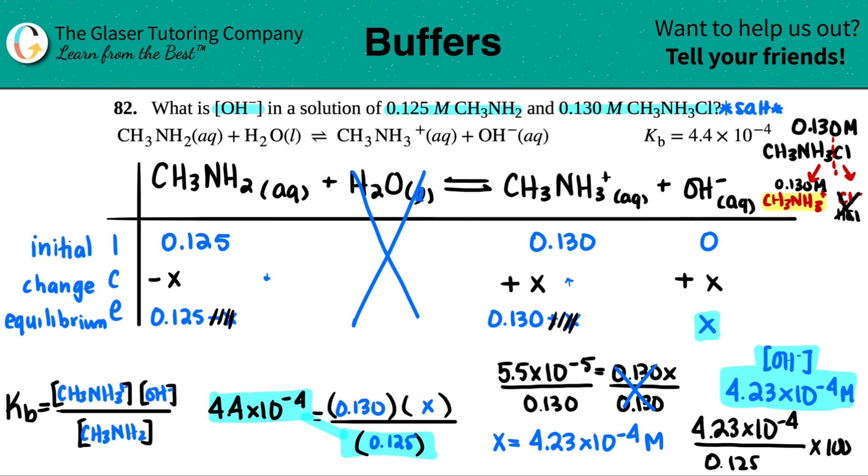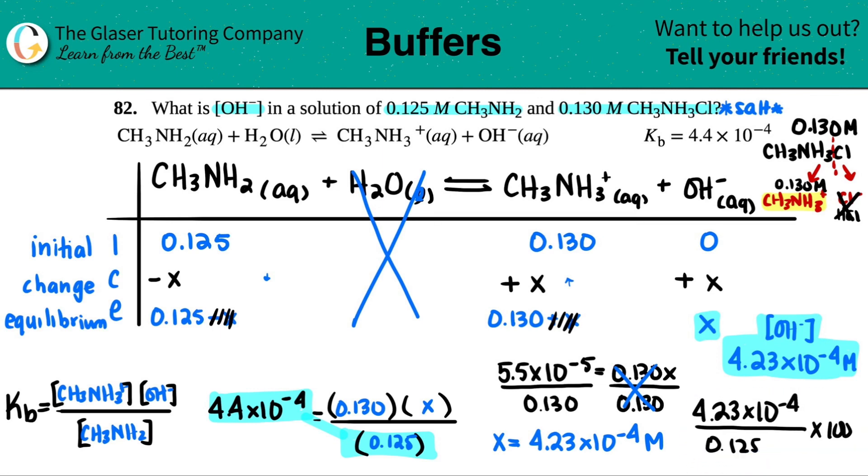However, if you do get a number that's higher than five, we got to go back and include those minus x's and plus x's and do the quadratic equation. So if I just do this, 4.23 times 10 to the negative fourth divided by 0.125 times 100, we get 0.34%, way lower than five. So we are good to go. And maybe I'll bring this up and just say at the bottom here that this actually equaled 0.34%, way lower than 5%. So we're good. So the OH minus concentration is 4.23 times 10 to the negative fourth molarity. And that's it.